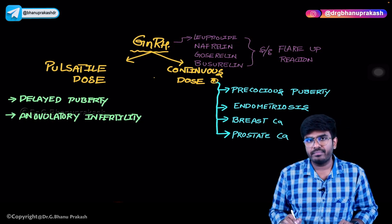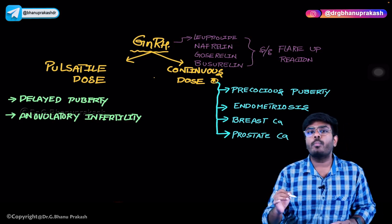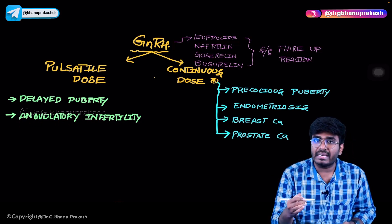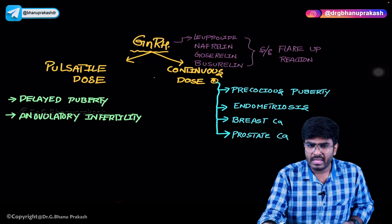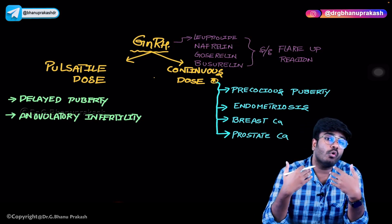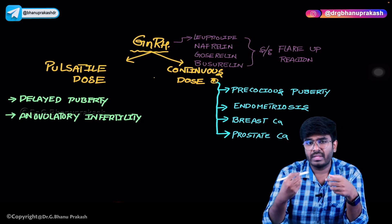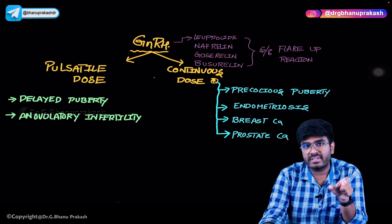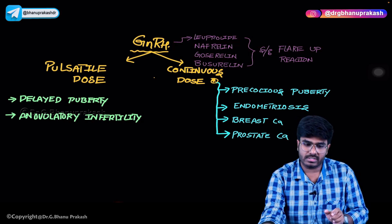Another condition treated with pulsatile GnRH analogs is anovulatory infertility. This is when a female is not getting pregnant because she is not ovulating — not releasing the egg. A classical example is PCOS, polycystic ovarian syndrome. By giving GnRH analogs in a pulsatile dose, the anterior pituitary releases FSH and LH, and LH promotes ovulation, thus treating her infertility.